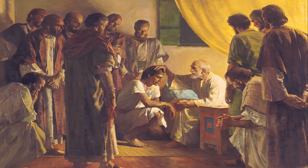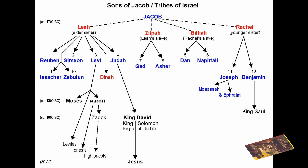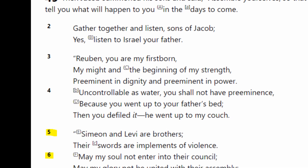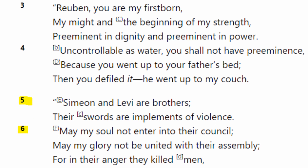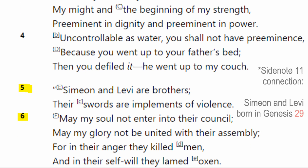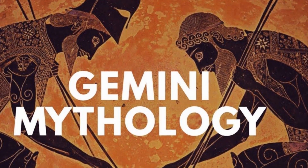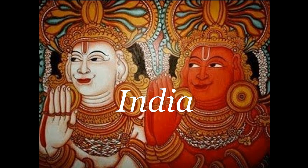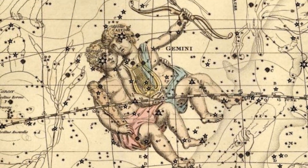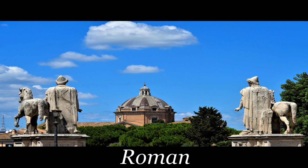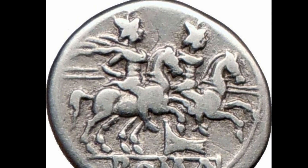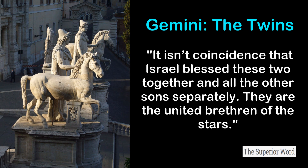Turning to Genesis 49:5-6 — Jacob is getting ready to die and gives a prophetic announcement over all 12 of his sons, who later become the 12 tribes of Israel. Uniquely, in verses 5 and 6 he ties two sons together — and the constellation of Gemini across many cultures connects to twin brothers or siblings. Jacob makes this connection by tying Simeon and Levi together. Many rabbis use Genesis 49 to depict the 12 tribes representing one of the 12 constellations.